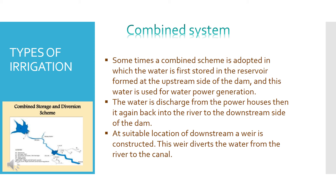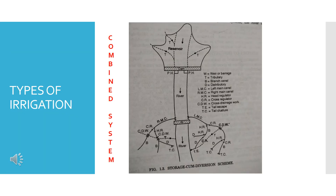On the downstream side, a weir is constructed and irrigation is provided through channels in the field. In the diagram, on the upstream side of the river there is a dam with a reservoir. Different tributaries feed in, and on the downstream side there is a weir. Left and right main channels are provided from the weir to distribute water to the fields.